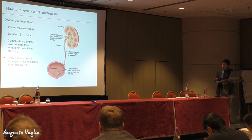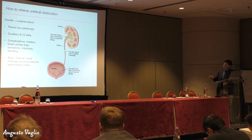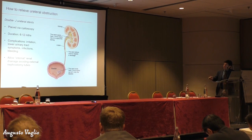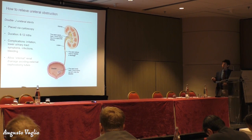What can we do to relieve obstruction? We usually try to be non-invasive and put a stent. A stent is a tube with two extremities — it is called a double-J because of the morphology of these extremities — and it locks the stent in the renal pelvis and in the bladder, allowing urine to bypass any blockage. It can be placed via cystoscopy. Stents usually last six to twelve months and need to be changed because they can become infected, obstructed, or calcified.